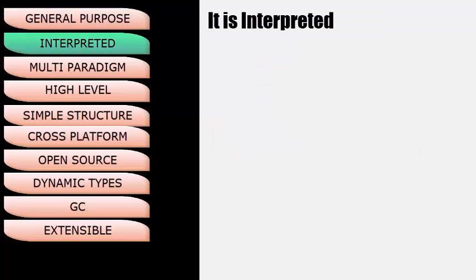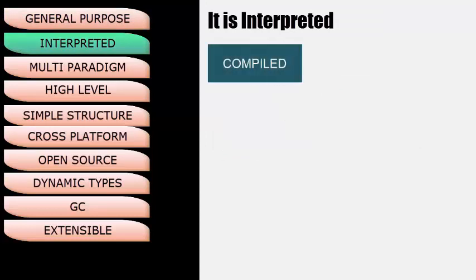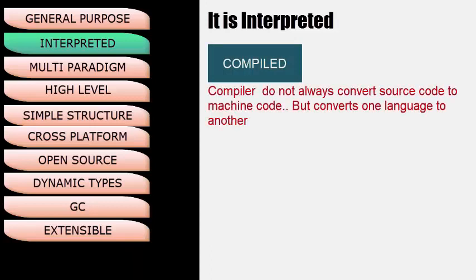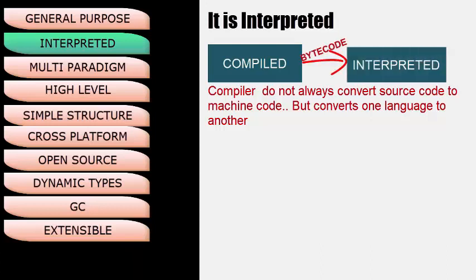The next feature is that Python is Interpreted. However, before interpretation, it gets compiled. Please note: compilers do not always convert source code to machine code — that happens only with C programs. Like Java, Python compilers convert source code to bytecode. Compilation involves three steps: Lexing, Parsing, and Generating.